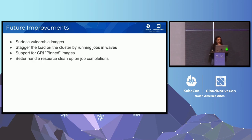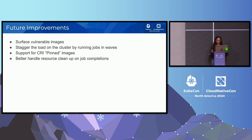Some things we want to improve in the future: surface vulnerable images to make it easier to see which images Eraser actually removed; stagger the load on the cluster by running jobs in waves; add support for CRI pinned images so we can filter these during removal; and better handle resource cleanup on job completions.